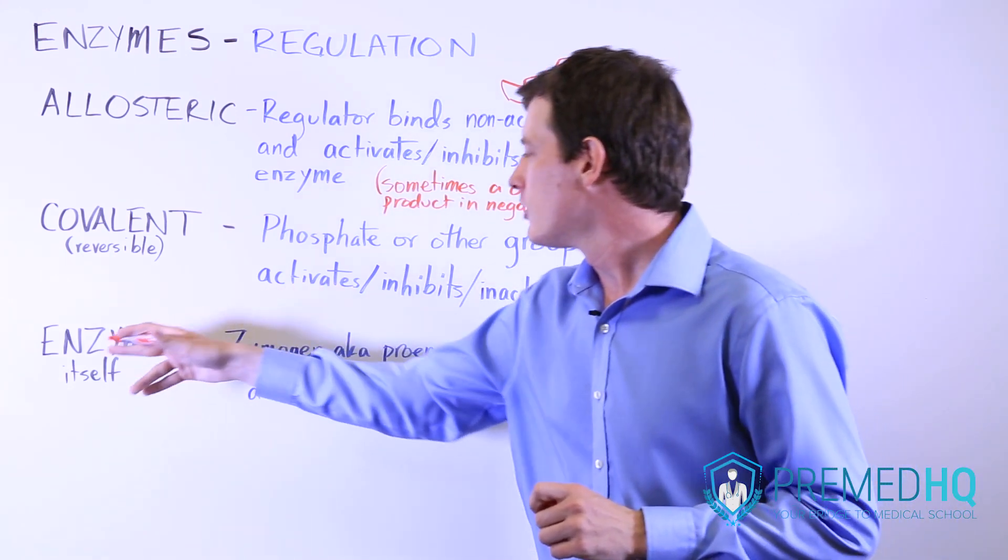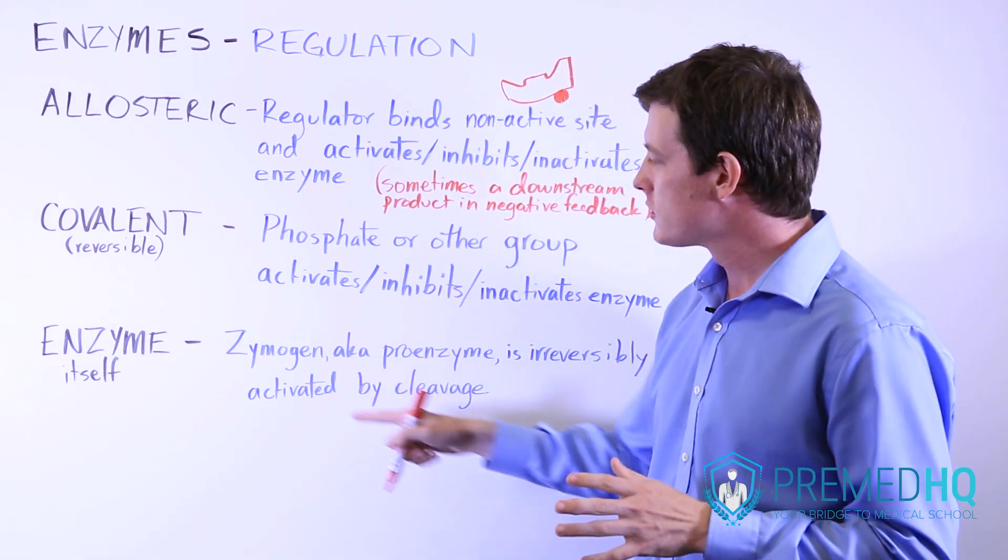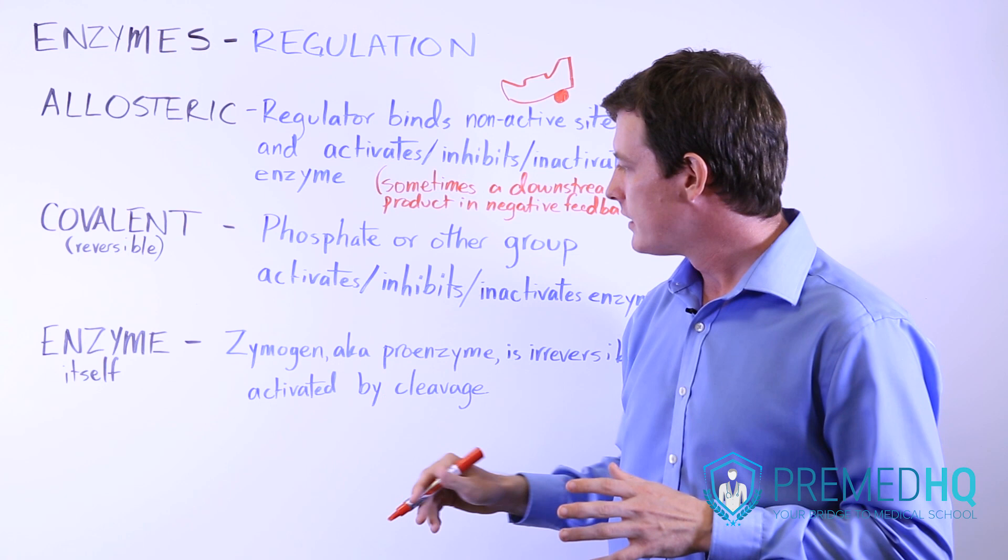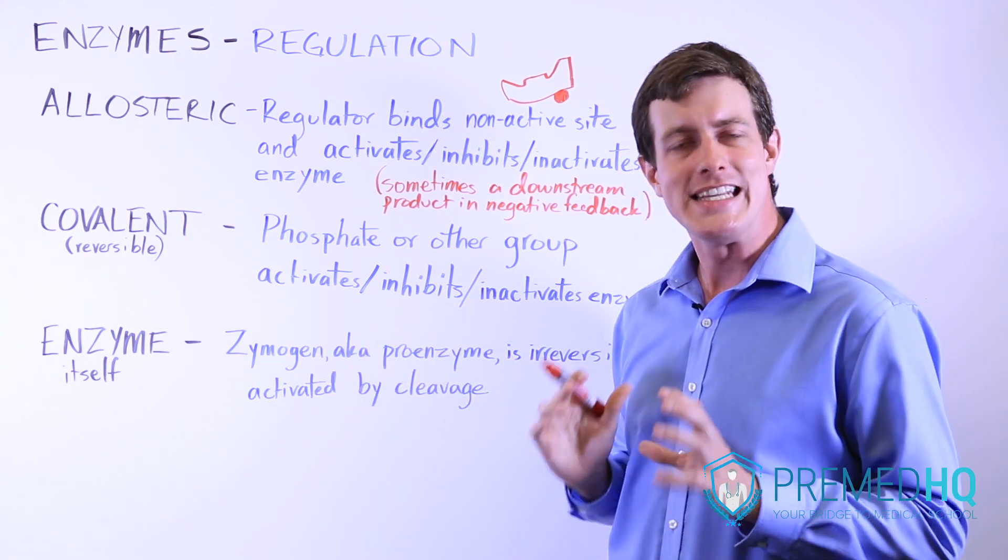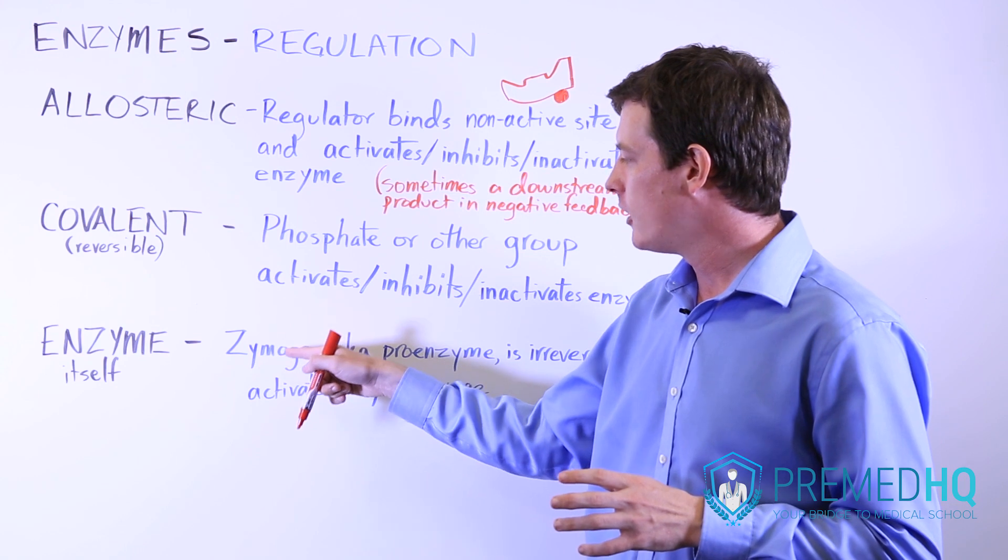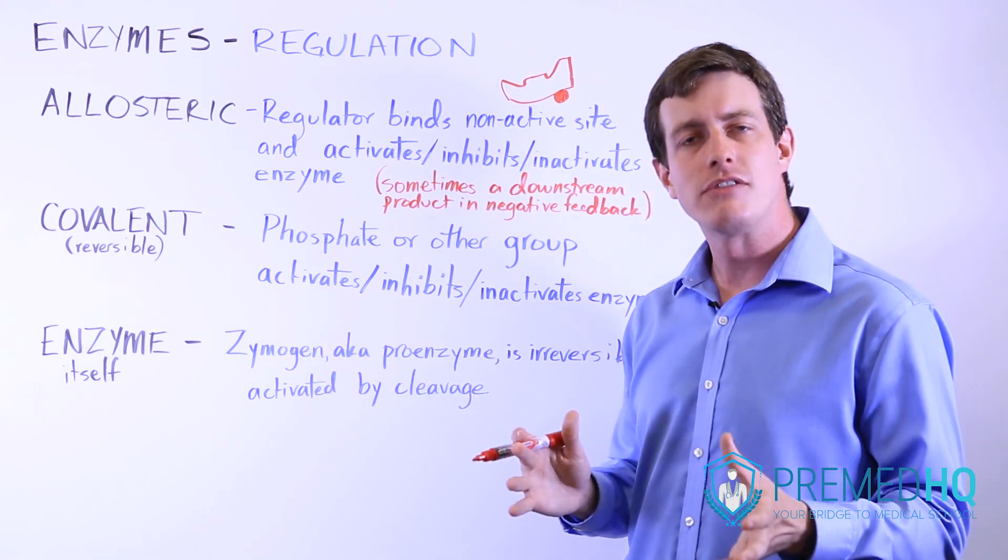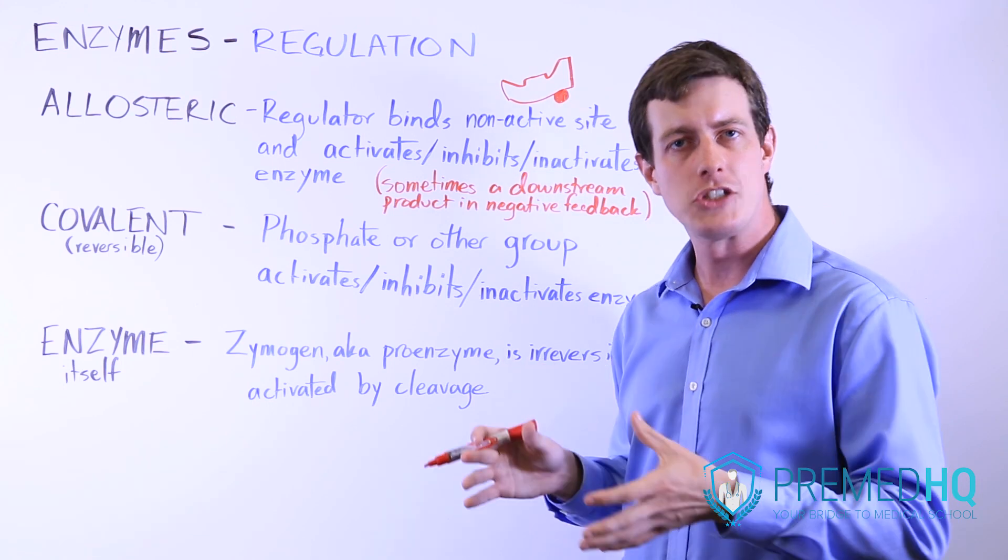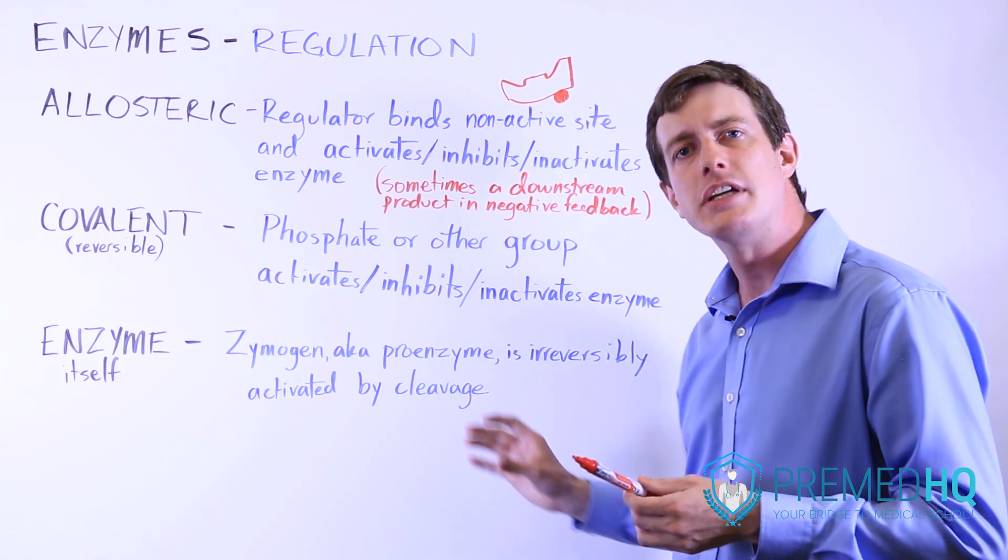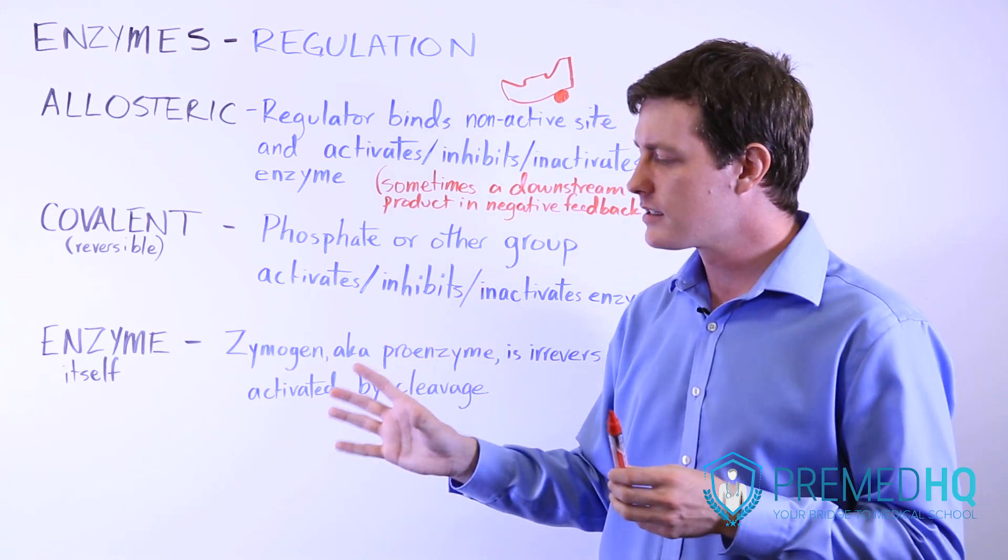The third one is with the enzyme itself, and what this usually refers to is zymogens, Z-Y-M-O-G-E-N. Zymogens will often have the ending O-G-E-N. One example that you're very likely to encounter is pepsinogen. Pepsinogen is secreted into the stomach, and then when it's in the stomach,